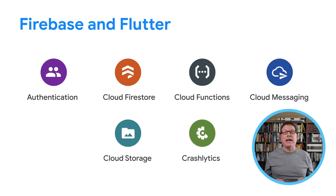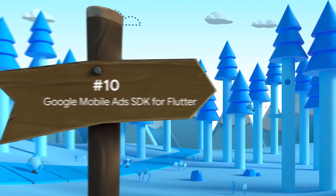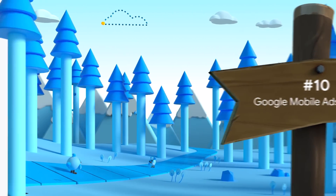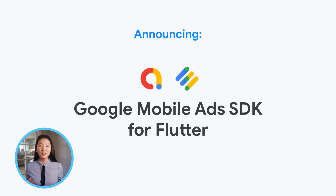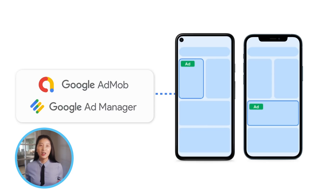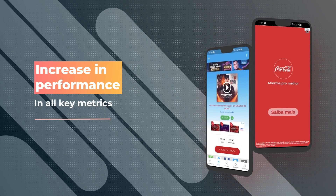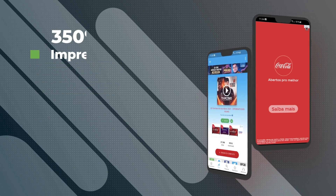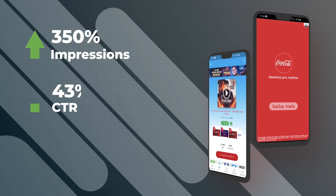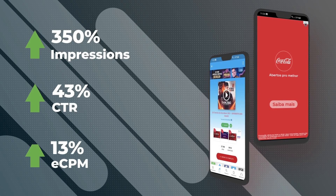We've updated all these packages to support sound null safety. But there's another major package we're releasing today — we're excited to announce an open beta for the Google Mobile Ads SDK for Flutter. This is a brand new plugin that provides inline banner and native ads in addition to existing overlay formats. We've been piloting this with early customers in a private beta. Musica is one of them, and we've seen amazing metrics: a 350% increase in impressions, a 43% increase in CTR, and a 13% increase in eCPM.